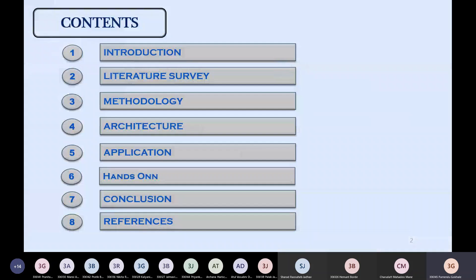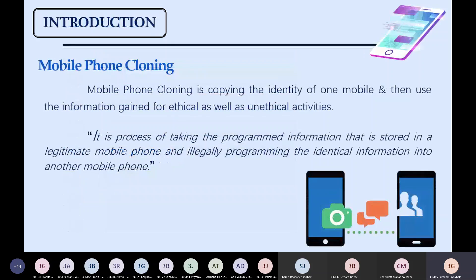The topics I am going to cover in this seminar are: first, a brief introduction of what a mobile phone is; then a short overview of the literature survey I have studied; then the methodology, how all these things work, and the architecture behind this; then the applications of mobile cloning; then a hands-on experiment with this topic; and finally the conclusion remarks and references.